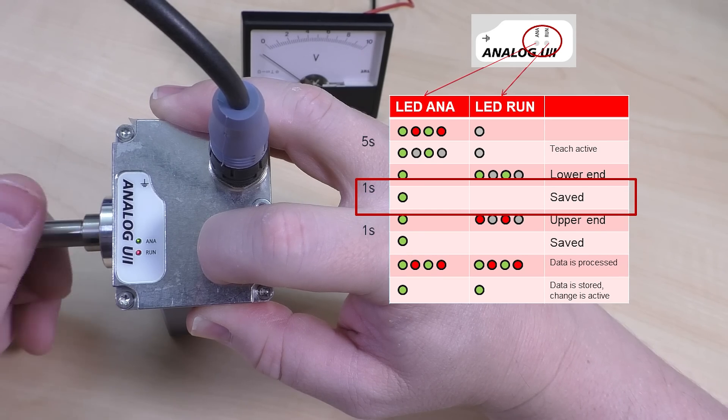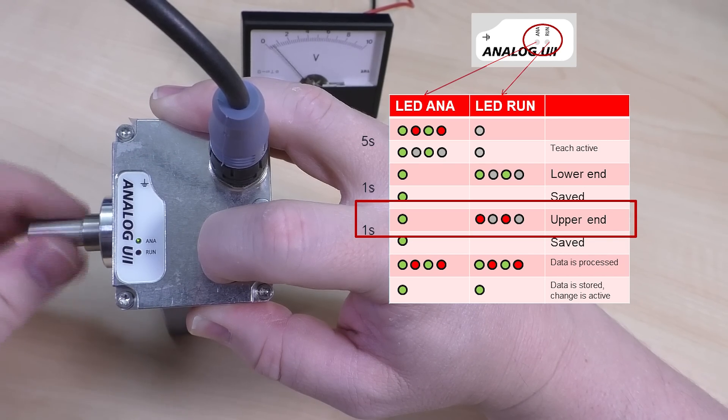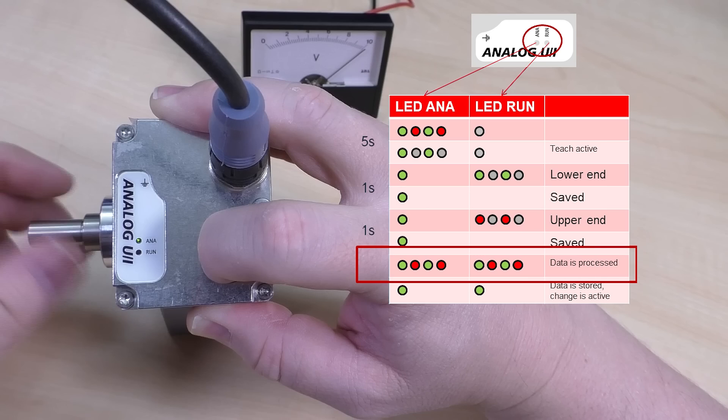The run LED will change from flashing green to flashing red, indicating that you can now program the end position. Move the machine axis to the desired end position and press the button once.